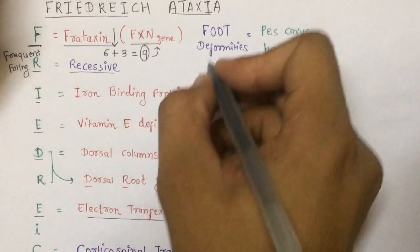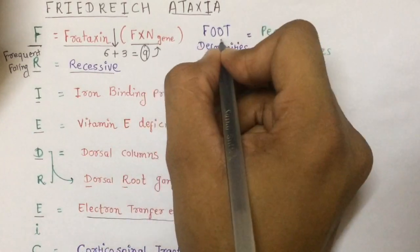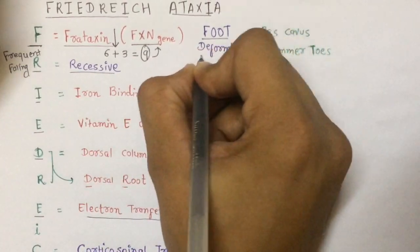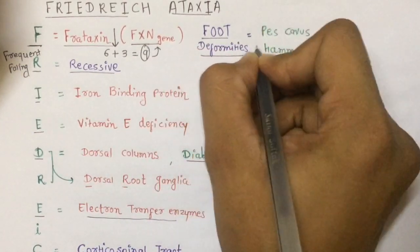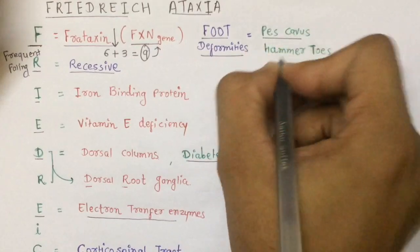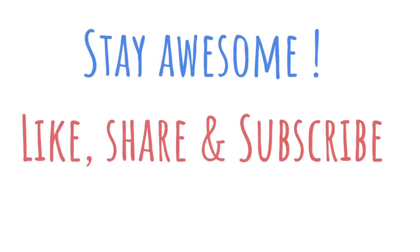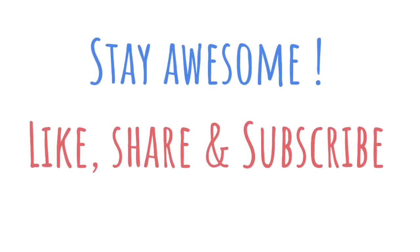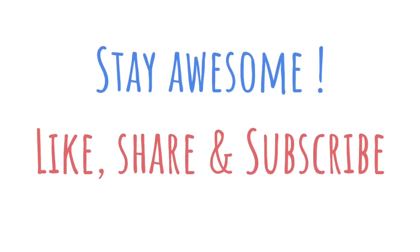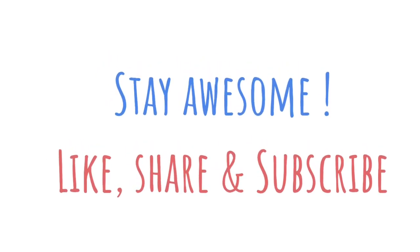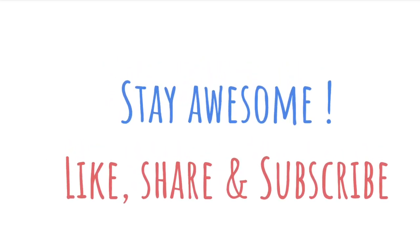From F, you can remember foot deformities in children, like pes cavus and hammer toes. That's all — don't forget to like, share, and subscribe. Stay awesome!